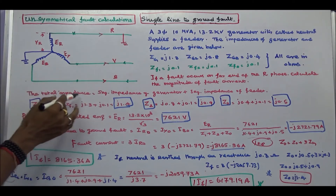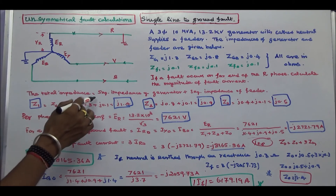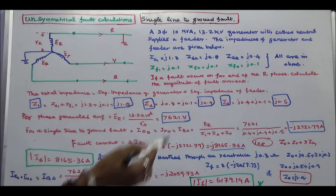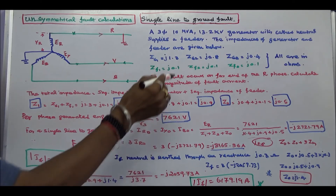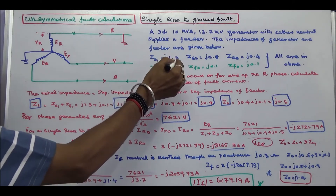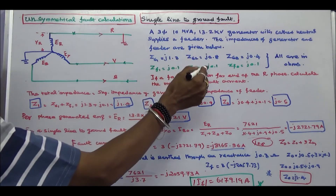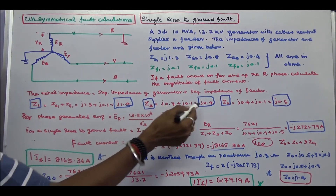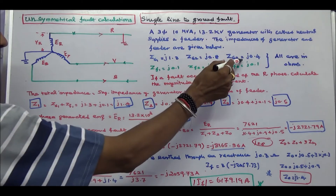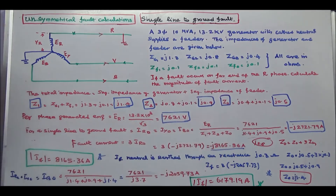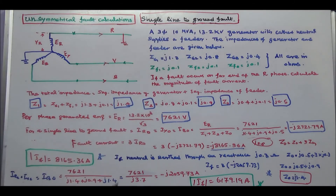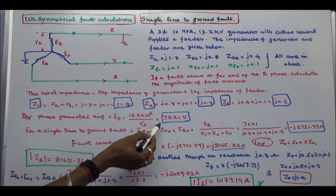First step: calculate the total impedance, which equals the sequence impedance of the generator plus the sequence impedance of the feeder. So positive sequence Z1 is equal to J1.3 plus J0.1, giving Z1 equal to J1.4. Z2 is equal to J0.8 plus J0.1, giving Z2 equal to J0.9. Z0 is equal to J0.4 plus J0.1, giving Z0 equal to J0.5. Next step: calculate per phase generated EMF Er, which is 13,200 divided by √3, equal to 7621 volts.